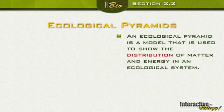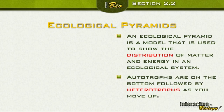An ecological pyramid is a model used to show the distribution of matter and energy in an ecological system. There should be a picture in your handout but that spot is blank. We're talking about a pyramid showing the distribution of matter and energy, with autotrophs at the bottom followed by heterotrophs as you move up.